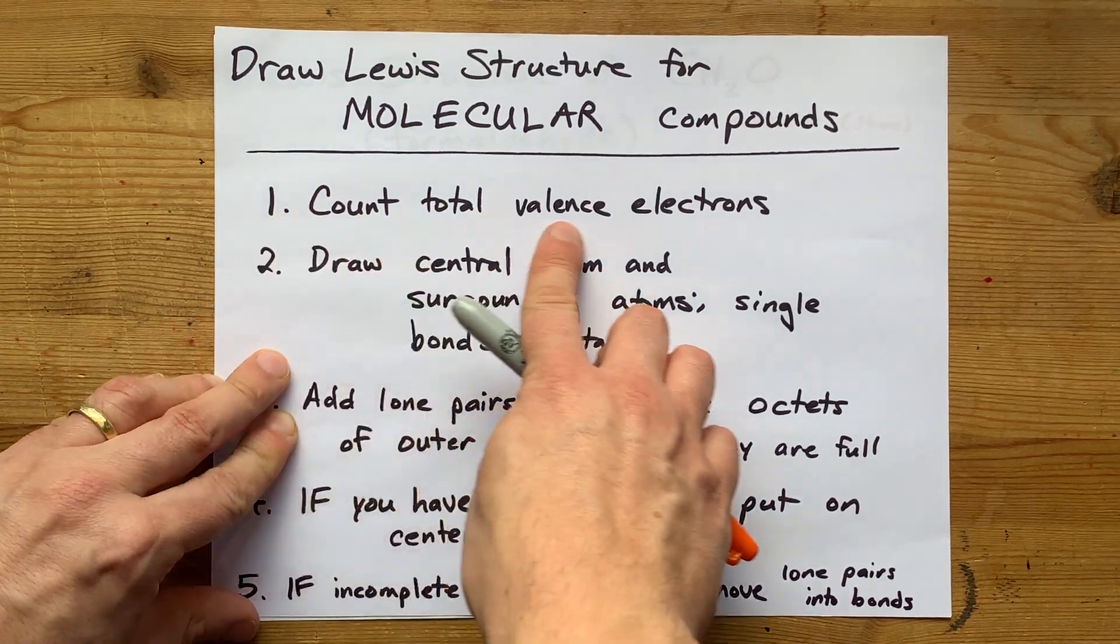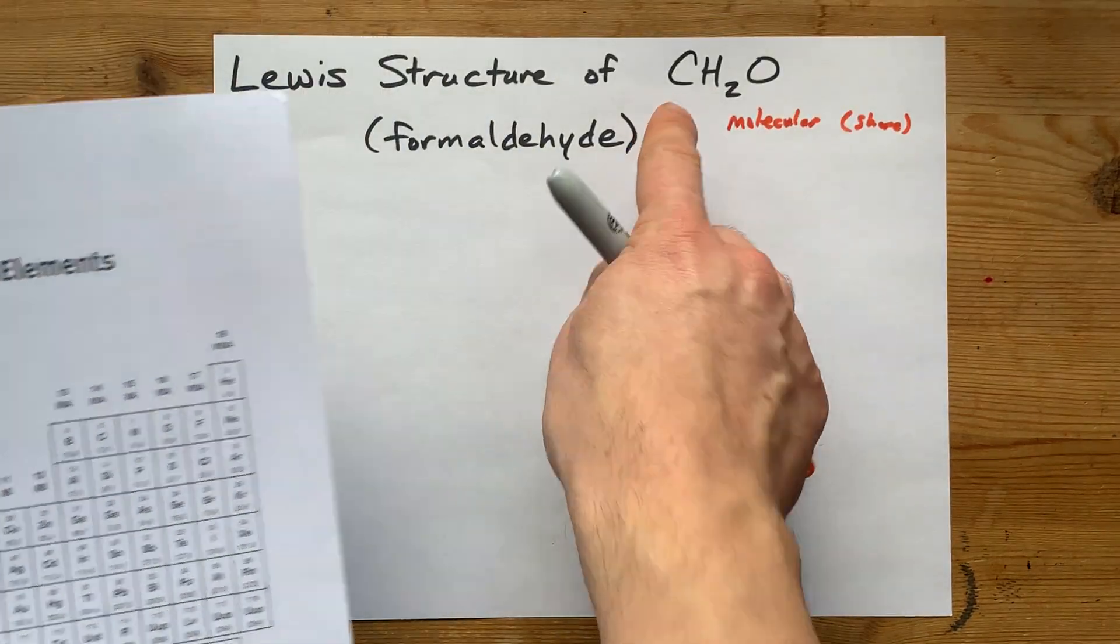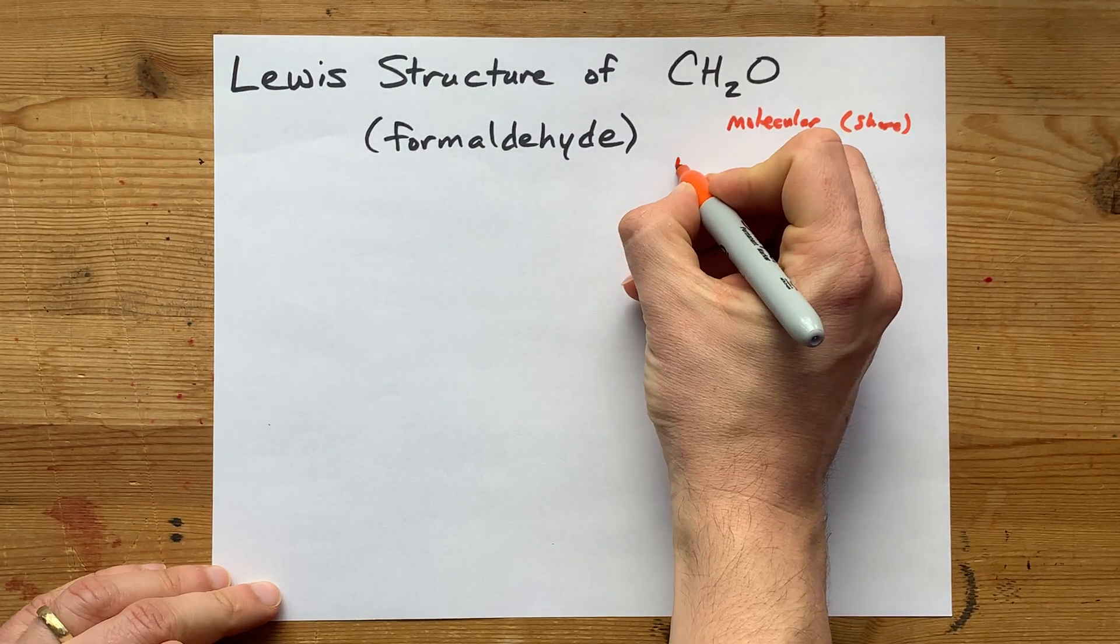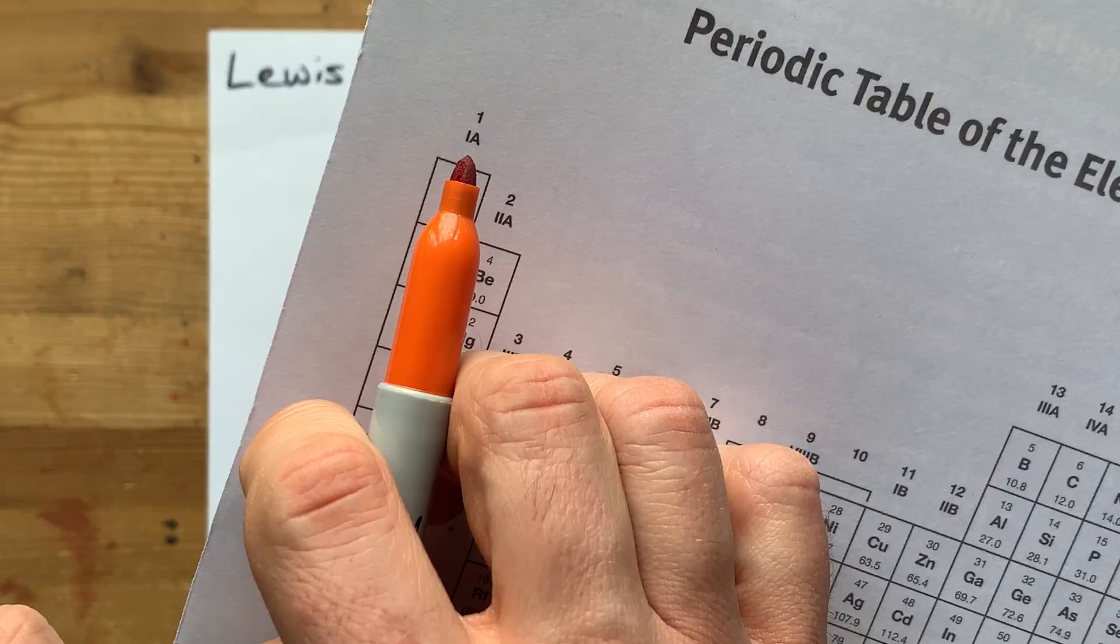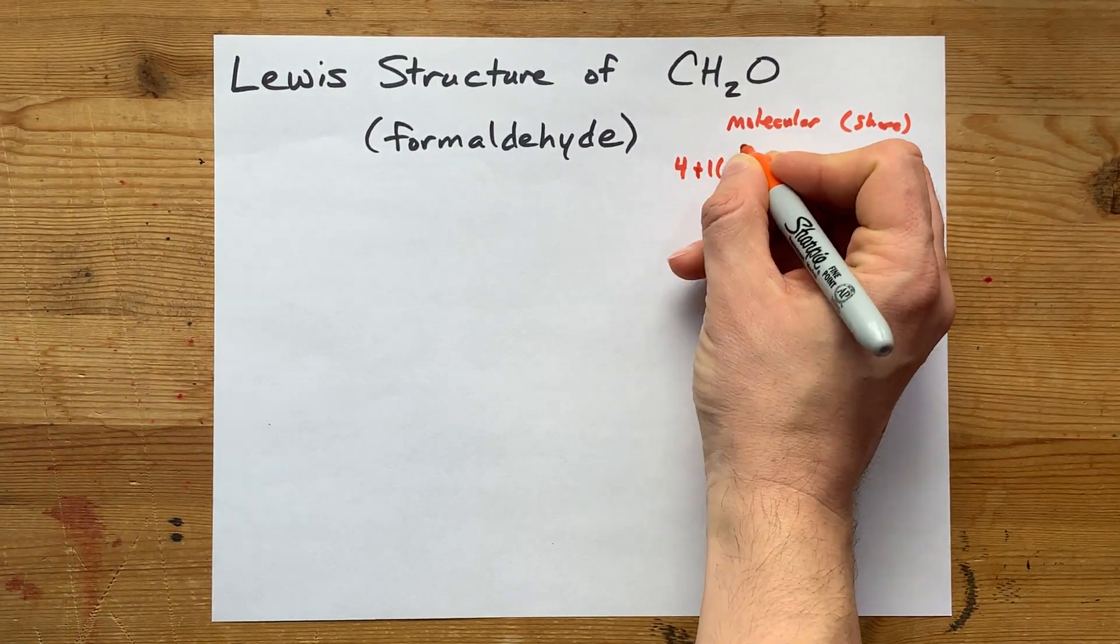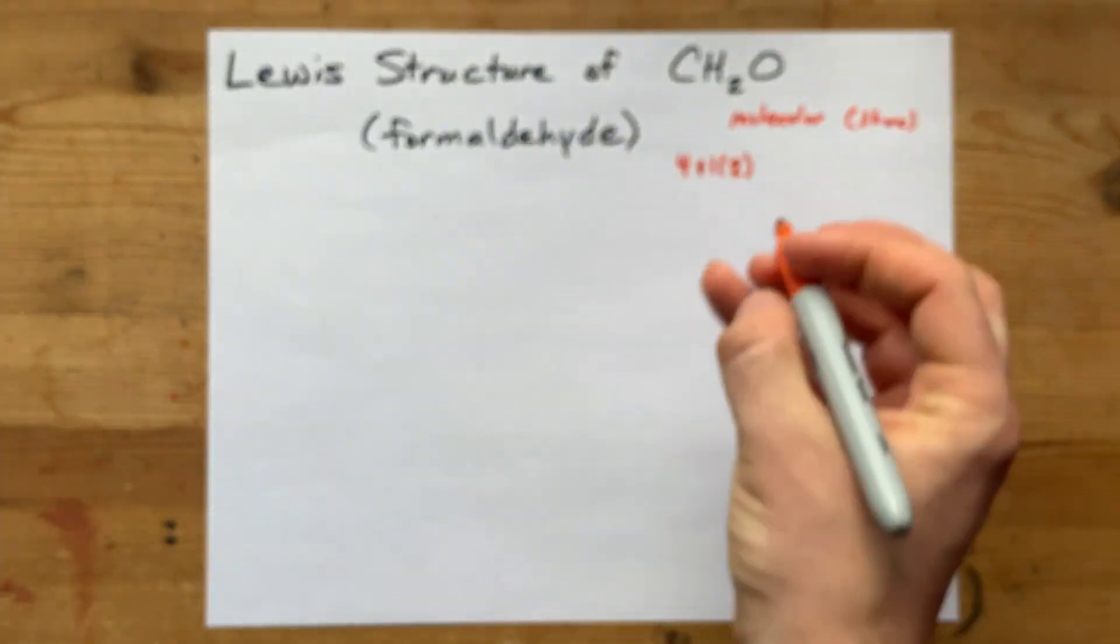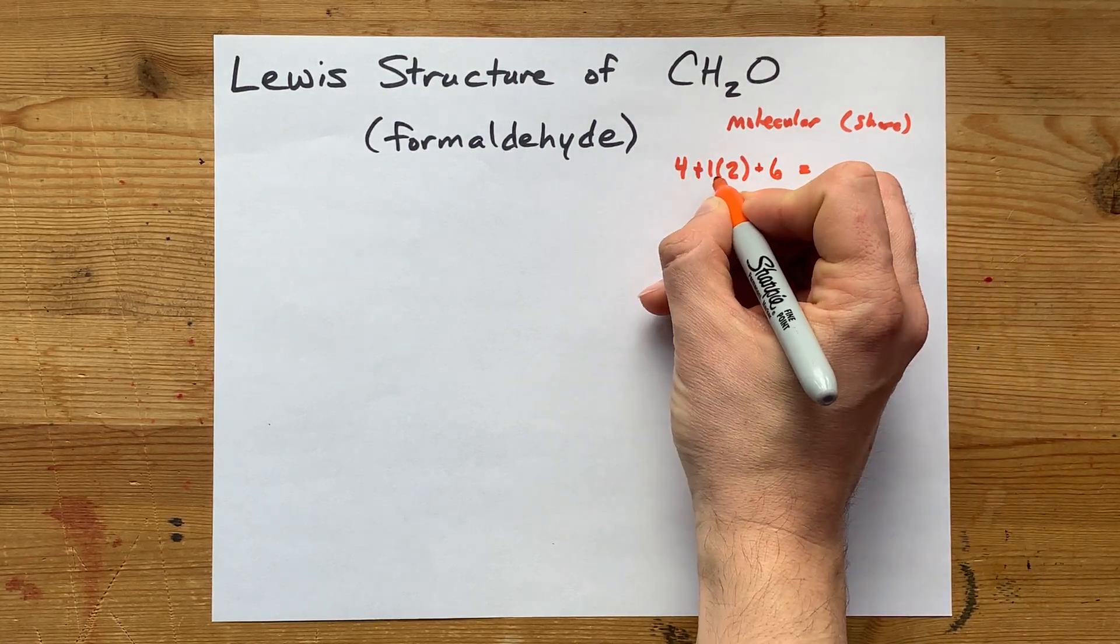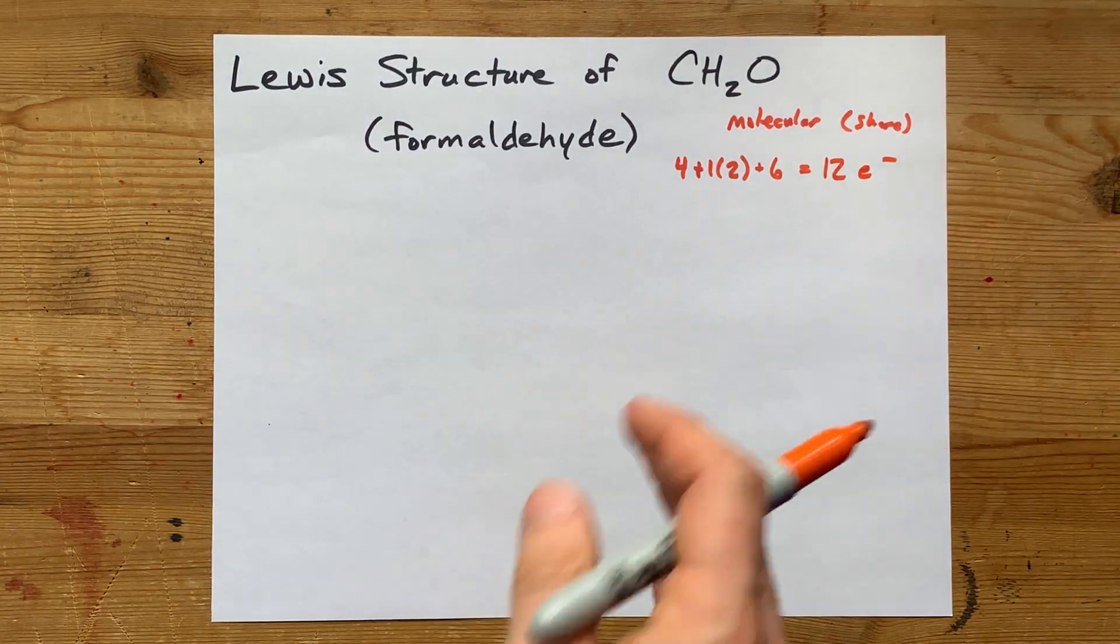Step one, count the total number of valence electrons that your atoms bring. Carbon is here in group 14, so it brings four valence electrons with it. Hydrogen, in group 1, brings one valence electron with it, but there are two of them, so I've got to times that by two. And oxygen, in group 16, brings six valence electrons with it. Four plus two plus six is 12 electrons total.